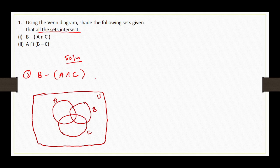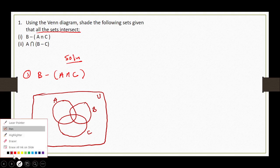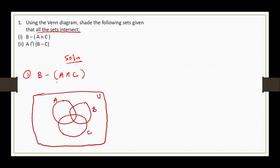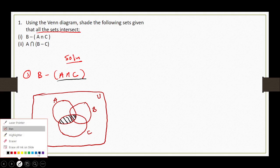After interpreting the statement, the next thing I have to do is start shading. I'm not going to shade everything at once — instead I'll start with A intersection C, which is in the brackets. So A intersection C is just this particular part, and this is the part denoting A intersection C. Then I've been given B, so in this particular case I'm going to shade set B.